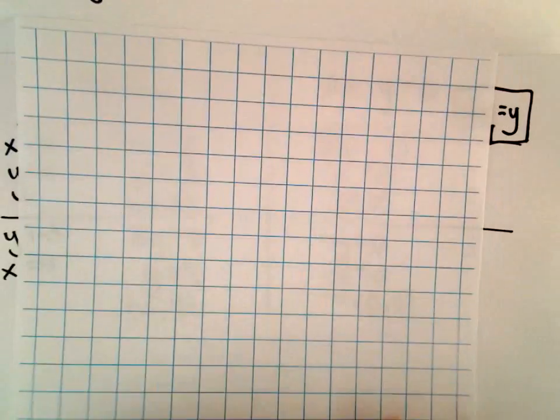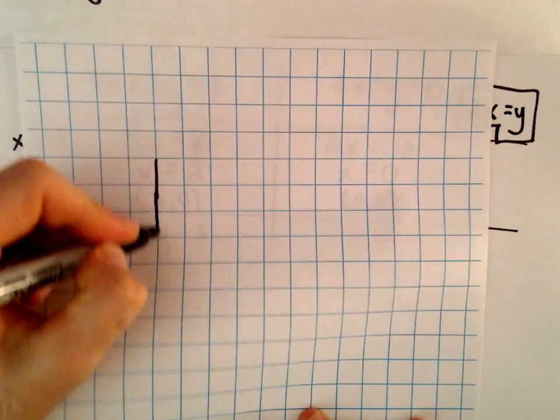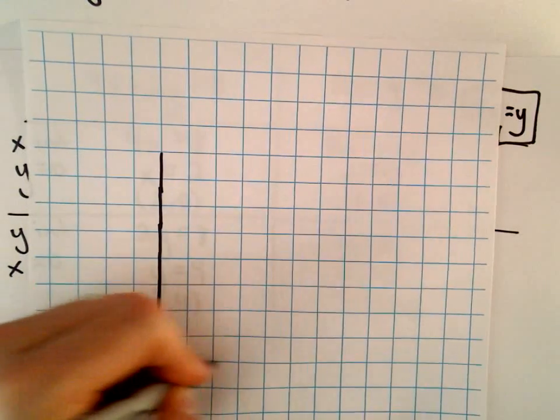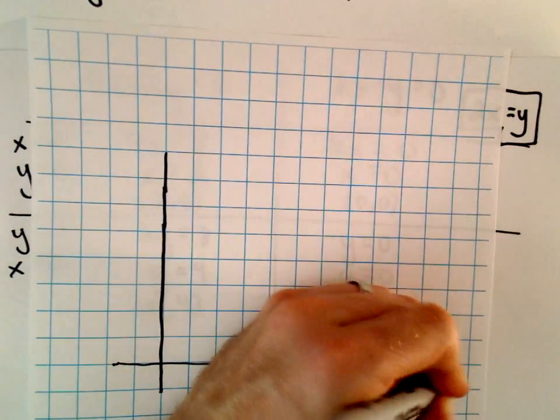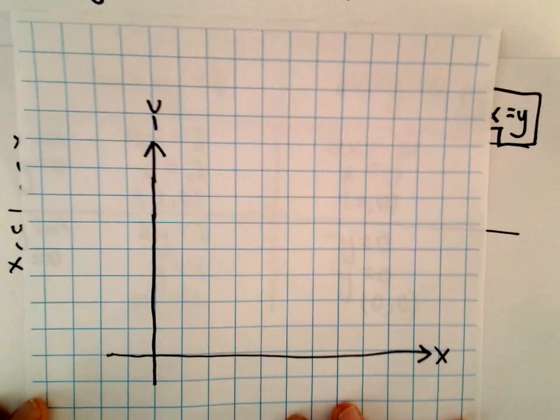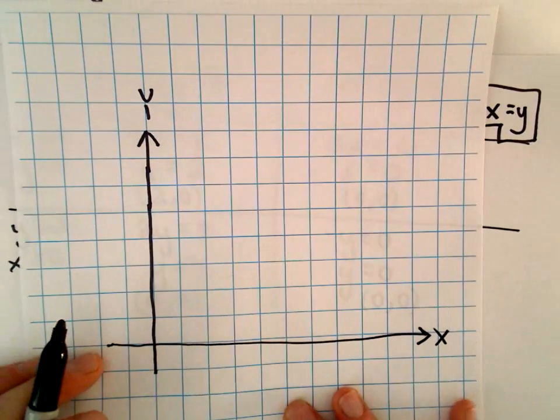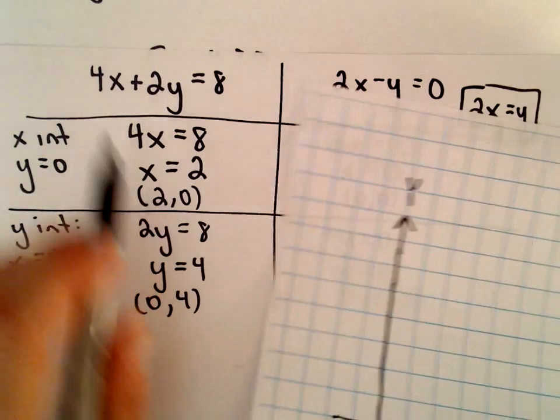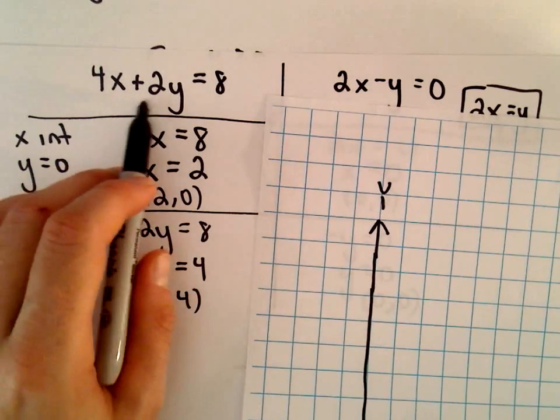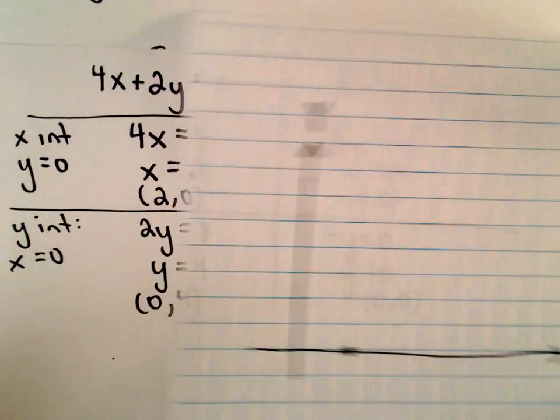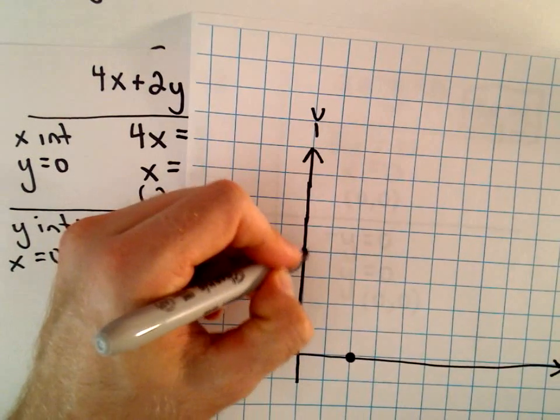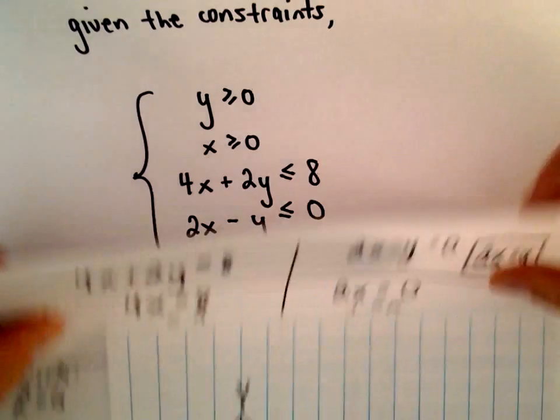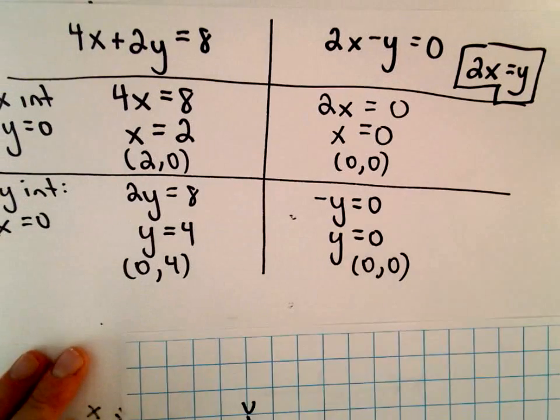Okay, so let's start graphing here. Again, we said we're in the first quadrant, so I'm going to make my graph so that we just really only see the first quadrant. Okay, so the first equation, 4x plus 2y equals 8, there's a point at 2, 0 and also at 0, 4. Again, since it was less than or equal to the original constraint, we can use a solid line.